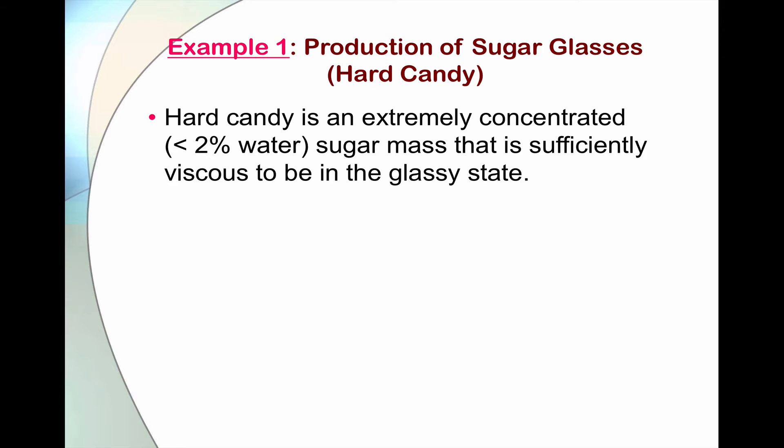And it is very high to the extent that it becomes very viscous. The viscosity exceeds 10 to 12 pascal second, and it is concentrated enough and viscous enough to be in the glassy state. So the process of hard candy is controlled in such a way so that the final product is desired to be in the form of sugar glass or in a glassy state, in a glassy amorphous state rather than a crystalline state.